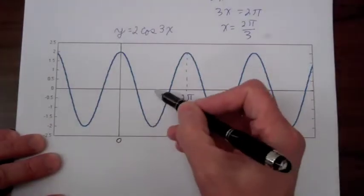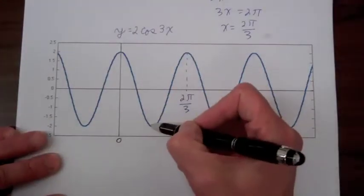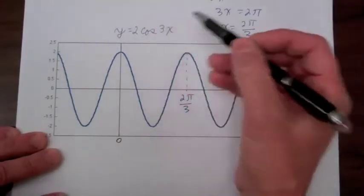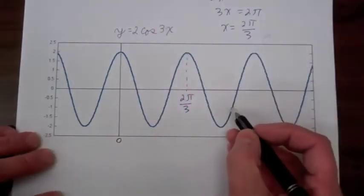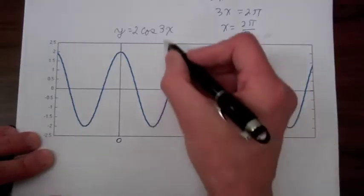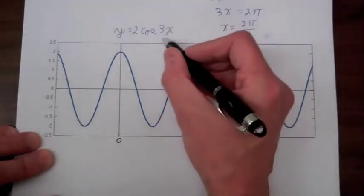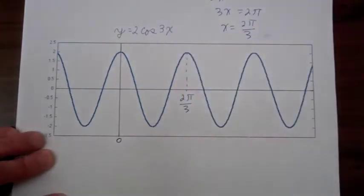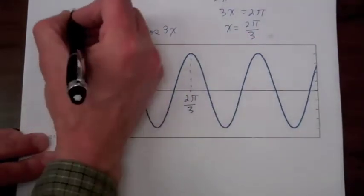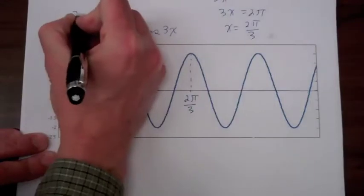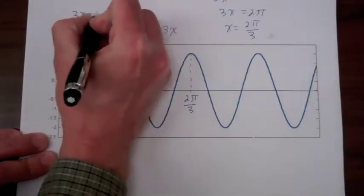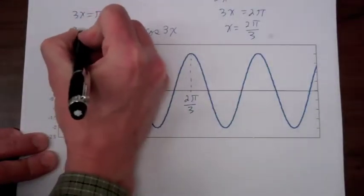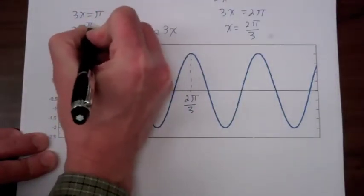This first trough is going to occur when the cosine function is minus 1, and that will occur when the argument 3x is equal to π radians, or when x is π/3.